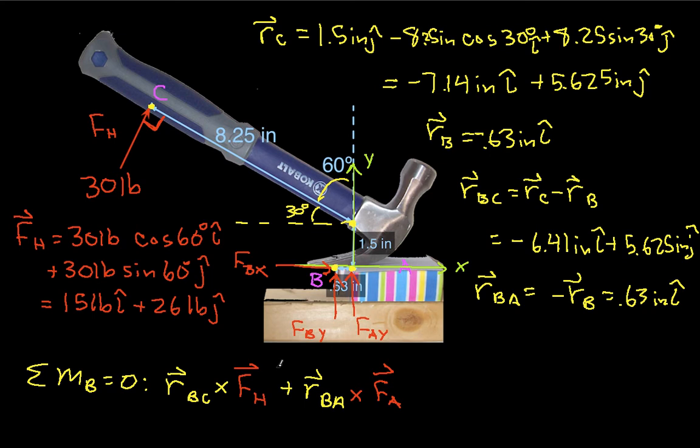And I'm not going to go through this in any detail. It's the same process as we had before. We end up then with this being minus 251.0 inch-pounds k-hat plus FA times 0.63 inches k-hat. And from this we can solve for FAY. FAY is equal to 398.4 pounds.